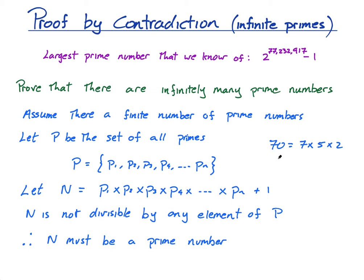For example, let's say I pick the number 37. 37 equals what times what? Nothing, I can't, there are no numbers, so 37 must be a prime.